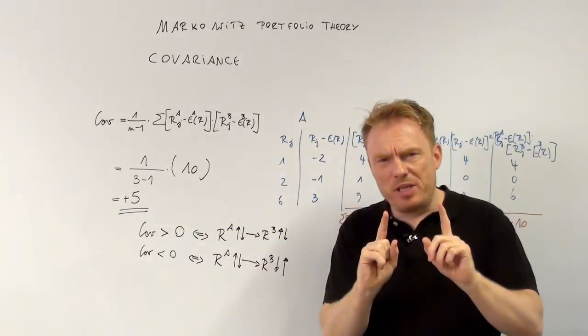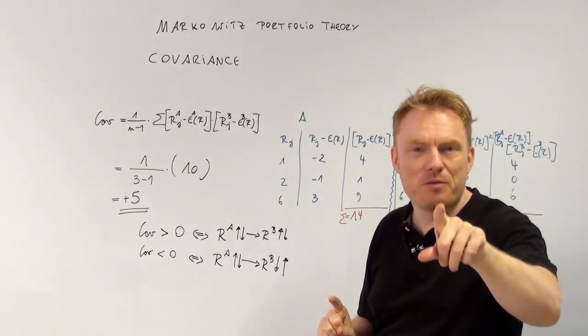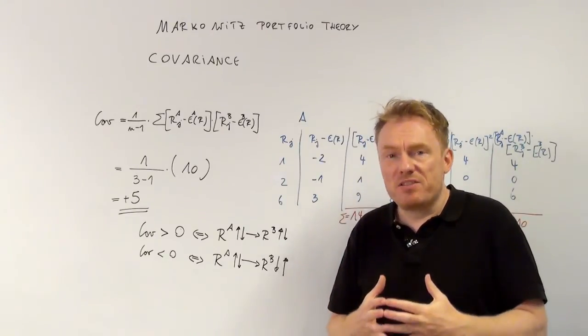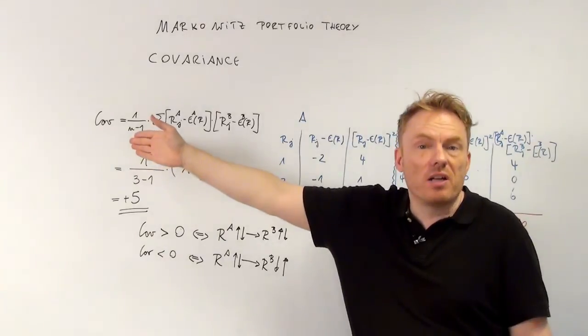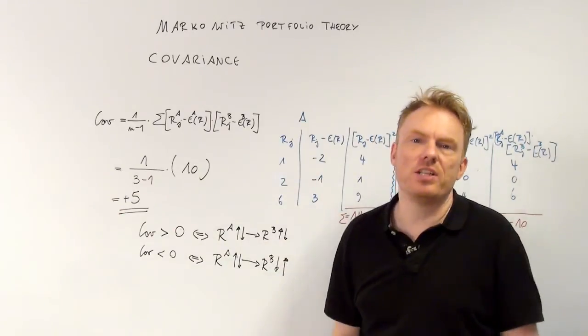And that's the reason why we compute the correlation coefficient, which will be done in a different video. Because the correlation coefficient has an upper bound of plus 1, but the covariance has not. And that's why we only take a look at the sign and not at the number.